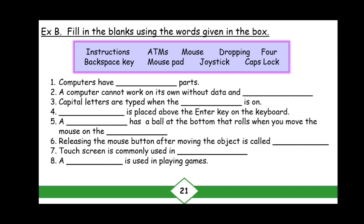The words in the box are: ATMs, mouse, dropping, four, backspace key, mouse pad, joystick, caps lock. These are the words and we have to use them in our blanks.